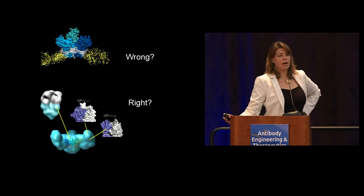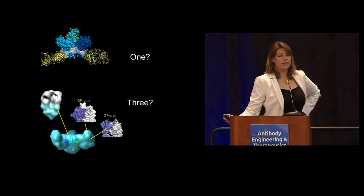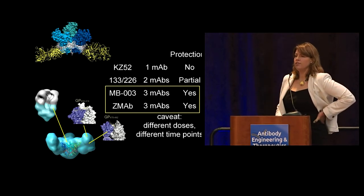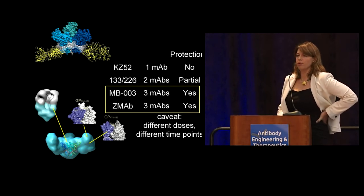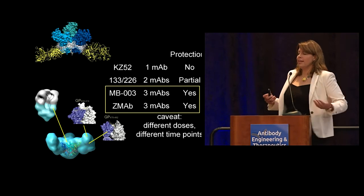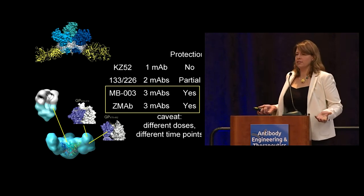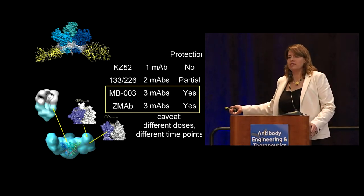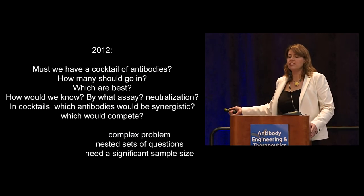Did that mean binding the bottom was wrong and binding the top was right? Or did it mean that one antibody by itself was insufficient and a cocktail of three was necessary? The idea that you just needed a cocktail came from the data: KZ52 alone didn't offer protection, the group that put two monoclonals together got partial protection, and the two groups that put three monoclonals together got complete protection. You can't directly compare these because they were given at different doses and time points, but at the simplest level — does this mean you just need a cocktail? Do you just need three?